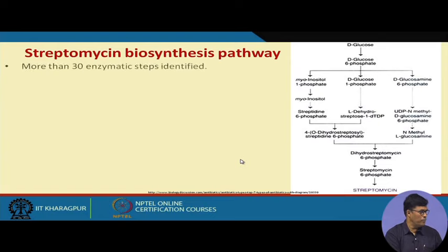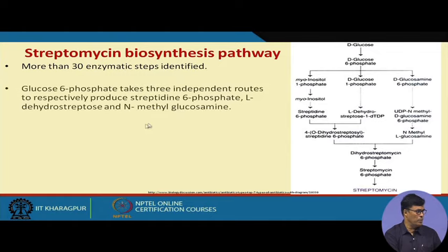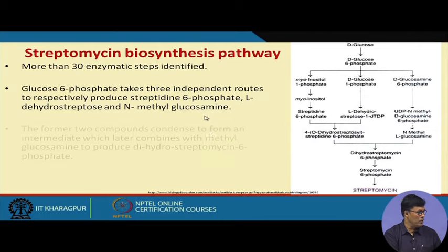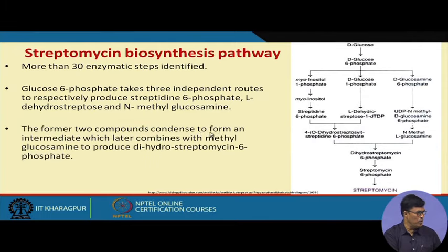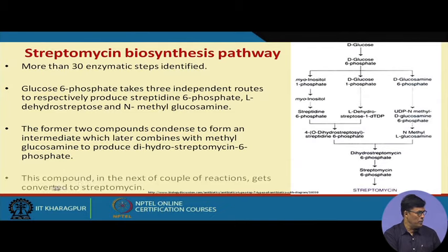Streptomycin production requires 30 enzymatic steps, as several steps are required before streptomycin is produced. Glucose-6-phosphate takes three independent routes to respectively produce streptidine-6-phosphate, L-dihydrostreptose, and N-methylglucosamine. The first two compounds condense to form an intermediate, which then combines with N-methylglucosamine to produce dihydrostreptomycin-6-phosphate, which is then converted to streptomycin.